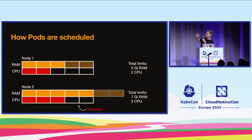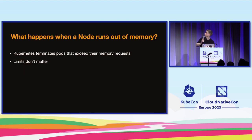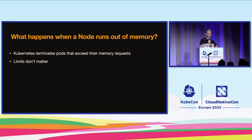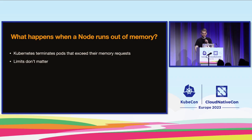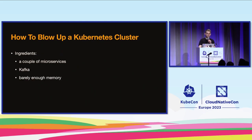What actually happens when a node runs out of memory? Kubernetes has to terminate some pods — but this time it's not necessarily the pods that exceeded their limits. Instead, Kubernetes terminates the pods that exceed their memory requests. So limits don't matter in this case. And this brings me to the title of the talk: how to blow up a Kubernetes cluster.